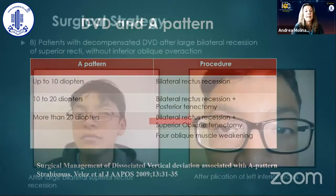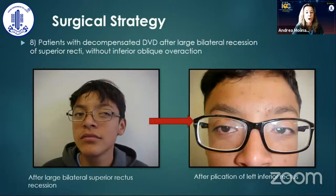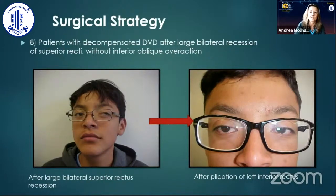Finally, patients with decompensated DVD after large bilateral recession of superior recti without inferior oblique overaction — like this pseudophakic boy who still had a decompensated DVD on the left eye — a plication or resection of the inferior rectus can be performed. Remember, this has to be moderate, up to five millimeters, in order to avoid unsightly cosmetic results.